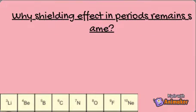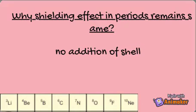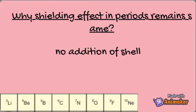Why does shielding effect remain the same in periods? It is because in periods there is no addition of shells when we move from left to right. The atomic number increases by one, but it does not affect the number of shells, which remains the same in a period. So shielding effect remains the same in periods because the hold of the nucleus over valence electrons remains the same. For example, the shielding effect of lithium is the same as that of beryllium.